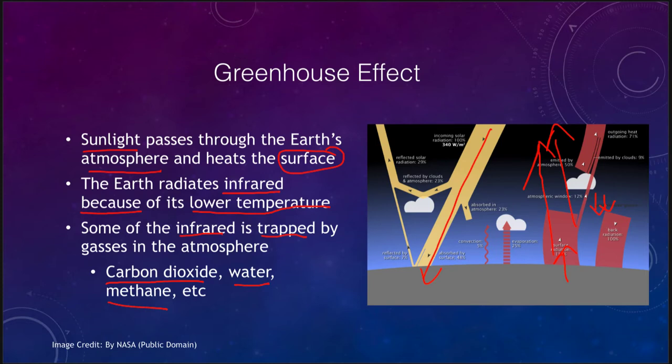You may also notice the greenhouse effect in terms of a car on a hot day, when the visible light comes in, heats up the interior, and is then re-radiated and trapped as infrared radiation, making the car very, very hot.